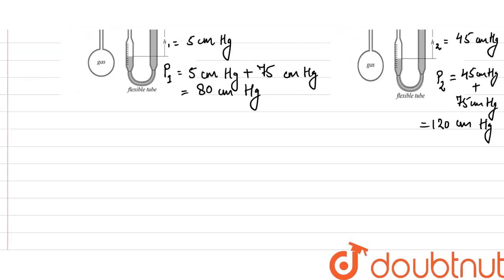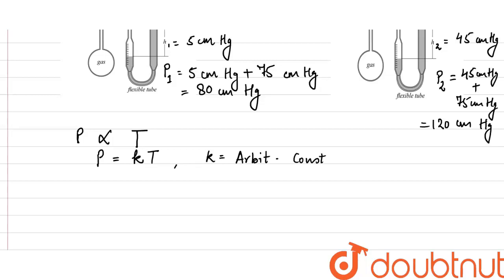Now, according to Gay-Lussac's law, the pressure of a given mass of a gas is directly proportional to the absolute temperature of the gas when the volume is kept constant. This means P is directly proportional to T. To remove the sign of proportionality, we place a constant k. We can also write P1 upon P2 is equal to T1 upon T2.